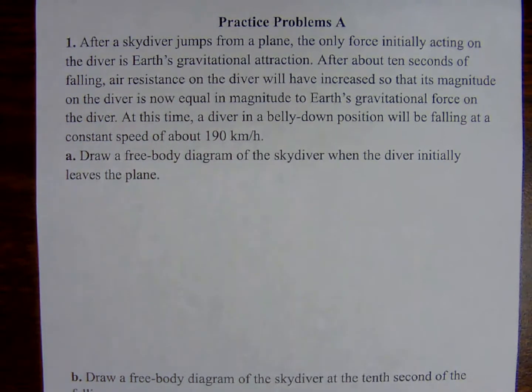So number one, after a skydiver jumps from a plane, the only force initially acting on the diver is Earth's gravitational attraction. After about 10 seconds of falling, air resistance increased so that its magnitude on the diver is now equal in magnitude to Earth's gravitational force on the diver. At this time, a diver in a belly-down position will be falling at a constant speed of about 190 kilometers per hour. So we're going to need to go back and mine that bit of writing for some information.